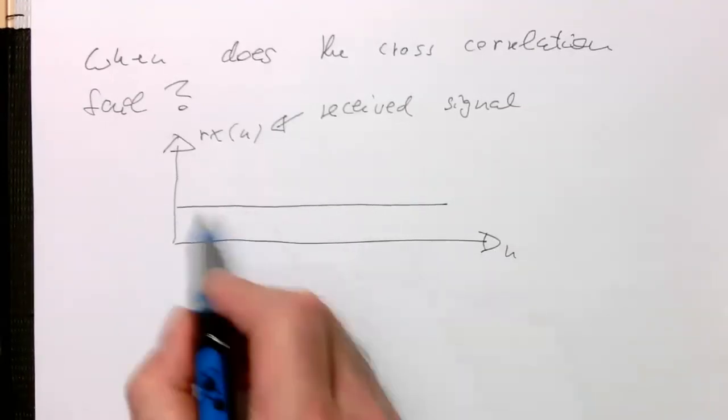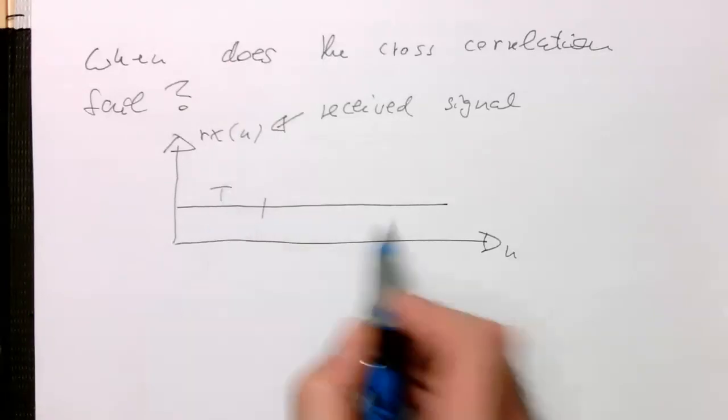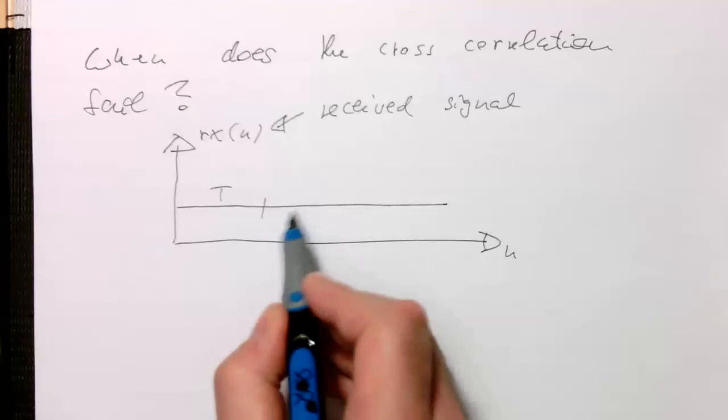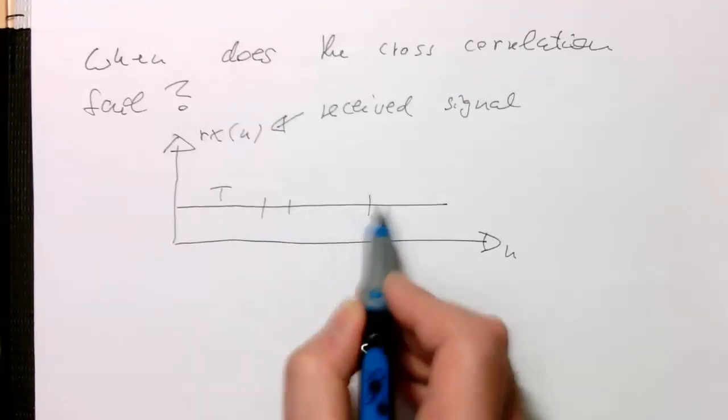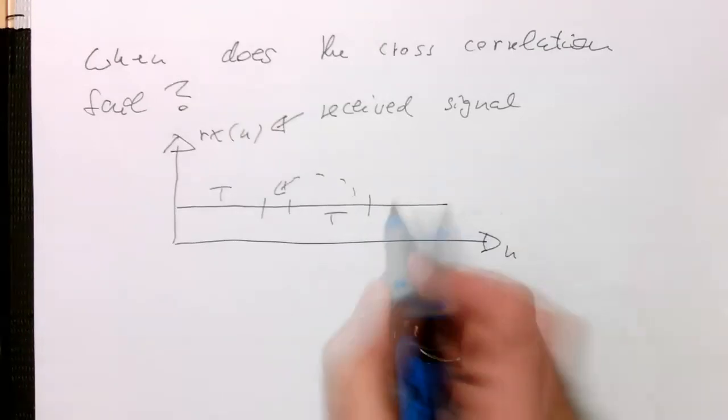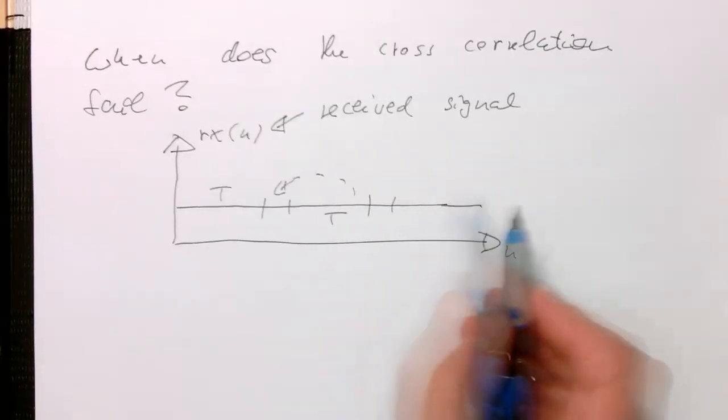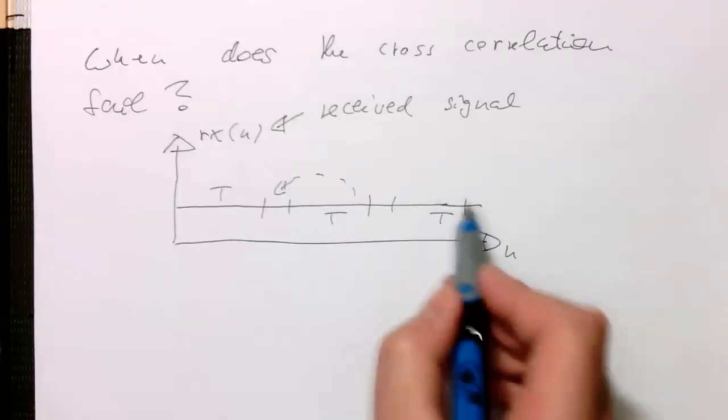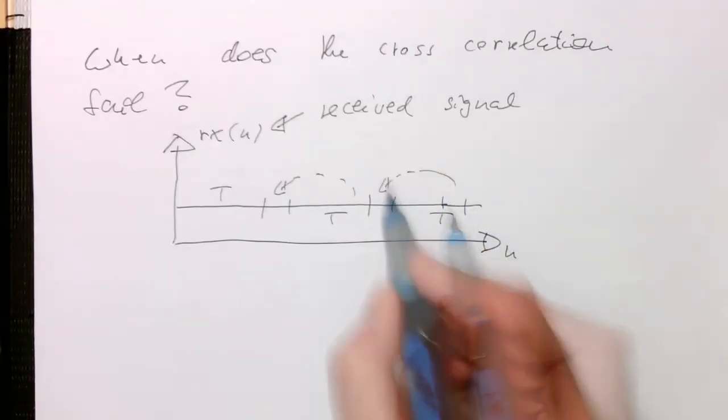So let's say here, that's a symbol duration T. And then here we've got our cyclic prefix, so that's another T here. And then again here we've got our symbol duration T, and this is here our cyclic prefix.